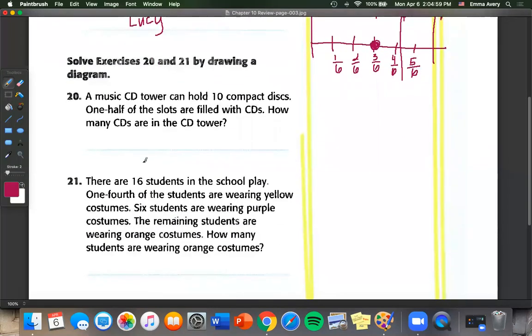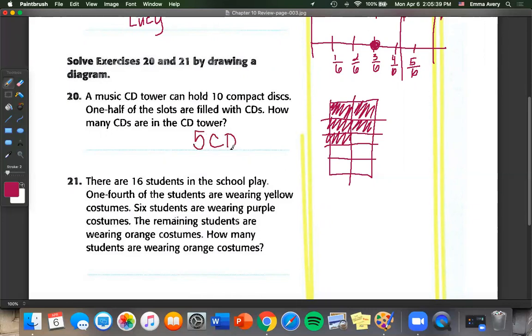Number 20. A music tower can hold 10 compact discs. One half of the slots are filled with CDs. How many CDs are in the tower? So we have to find out what half of 10 is. So if we draw a box over here. Pretend this is our CD case. Two, three, four, five, six, seven, eight, nine, ten slots. And half of them are filled. Well, we can shade in half of them. What do we have left? We've got one, two, three, four, five left. We can say five CDs.